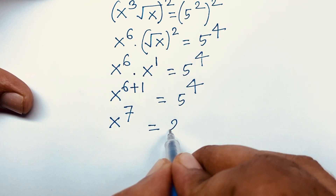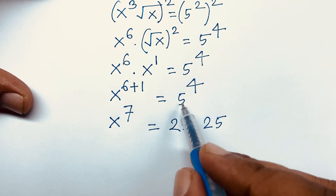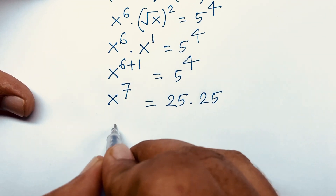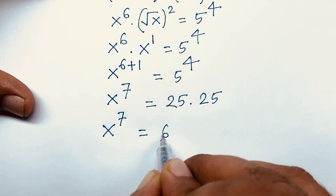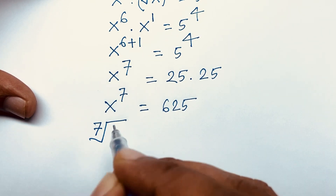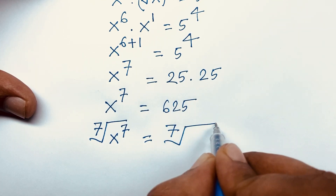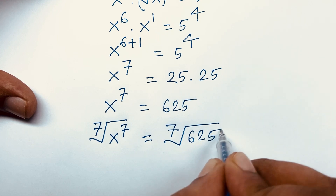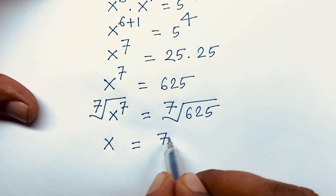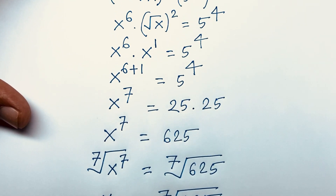5 to the power 4 equals 25 times 25, because 5 to the power 2 times 5 to the power 2 is 25 times 25, which equals 625. So x to the power 7 is equal to 625. If I take the 7th root of both sides, the x to the power 7 cancels and we find x is equal to the 7th root of 625. This is our final answer.